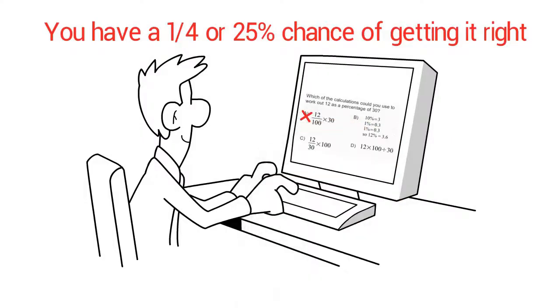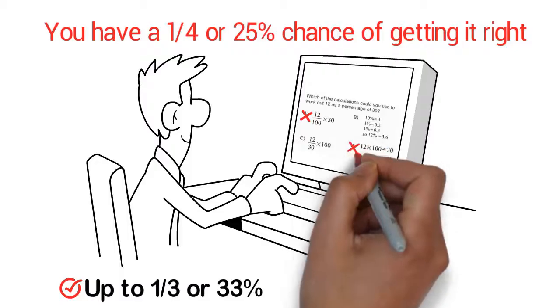But if you're able to eliminate one guess you know is wrong, your probability to guess right jumps up to 1 out of 3 or 33%. If you can eliminate two choices, your probability to guess shoots up to 1 out of 2 or 50%.